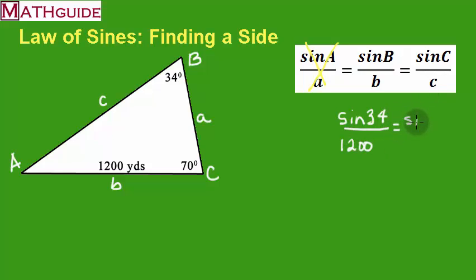Then I'm going to put sine of big C, that's 70 degrees. And I'll put the little degree symbols there. And little c, I don't know.